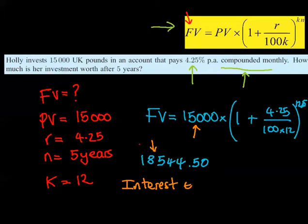So the interest is this figure take away the 15,000. So the difference between the two of them is 3,544 pounds and 50 pence. That's the interest if they ask you to work that out.